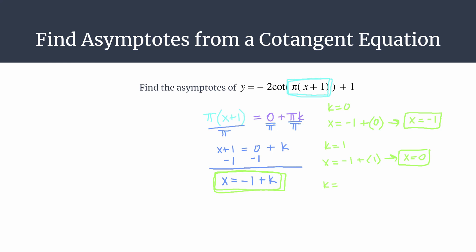And finally, let's sub in k equals negative 1. Of course, you can do this with all the integers k, infinitely many. We have x equals negative 1 plus negative 1. So we should see another asymptote at x equals negative 2.